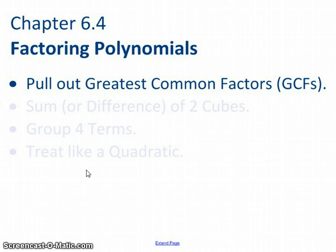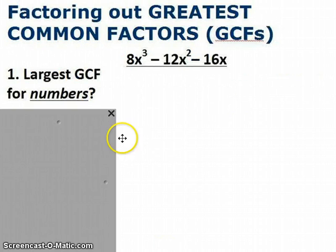First of all, pulling out the greatest common factors. This is the first step that I would recommend taking with any polynomial that you're asked to factor. So as an example here, here's a polynomial expression. And you do it in two steps really. The first step being that you look only at the numbers, the coefficients, 8, 12, and 16. What they have in common is 4, that's the GCF, you pull that out.